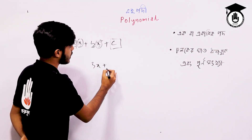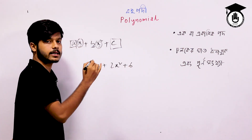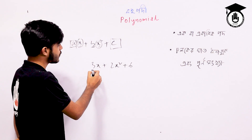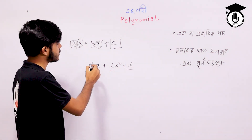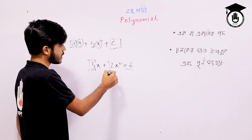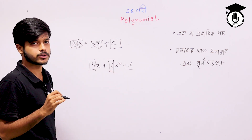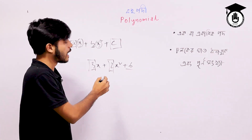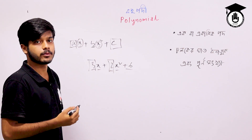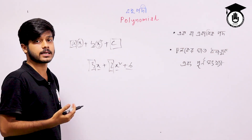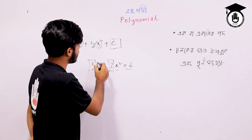3x plus 2x² plus 6. The answer is 3, 2, and 6, and the answer has 1. So we are making the answer for sure. We have confirmed that this answer is not clear. The answer is not clear. This answer is mandatory. So what you will find is 4. X is 4.